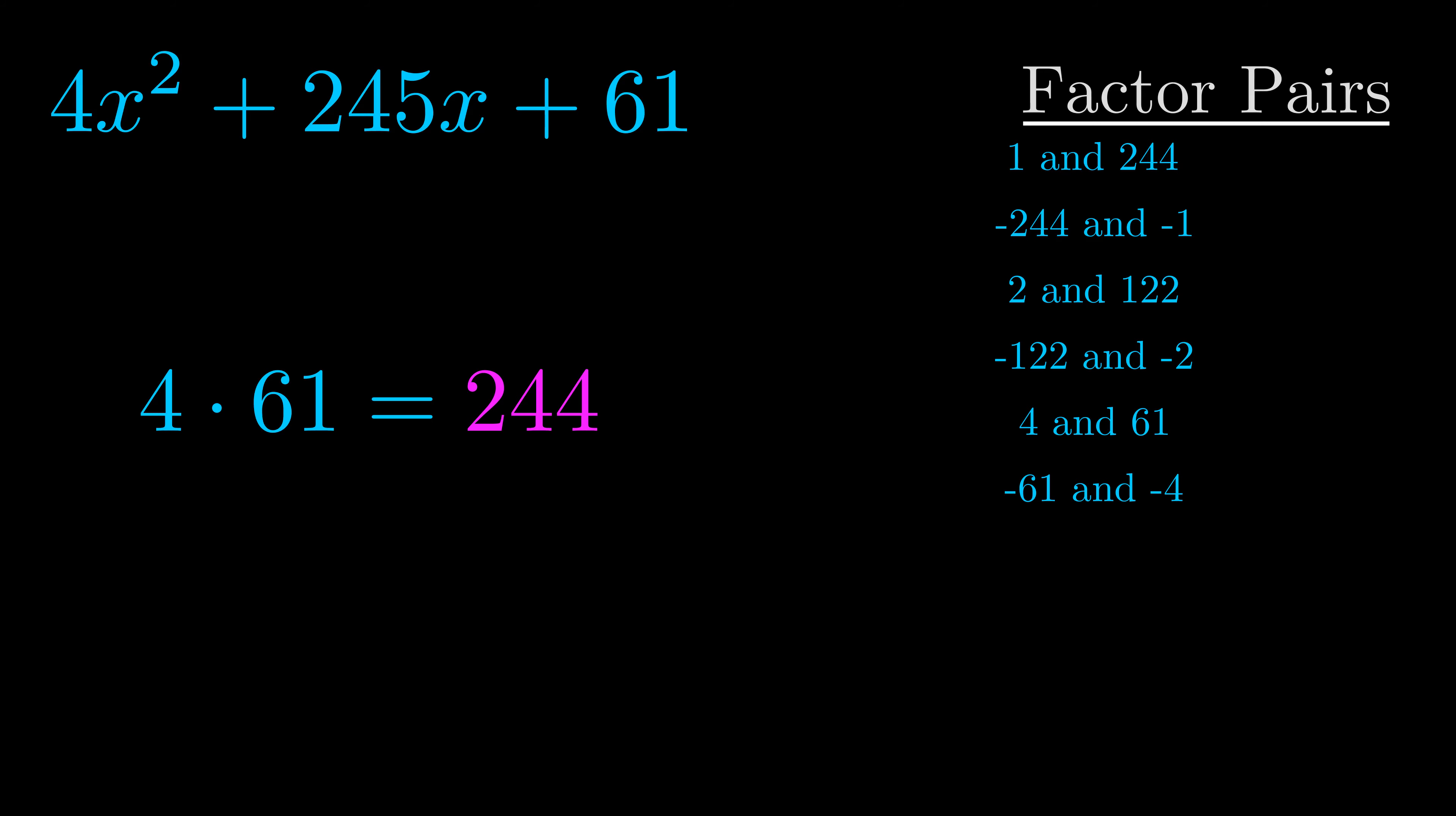The b value is the coefficient on the x term. That's the middle term, the one that we haven't done anything with yet. And really this is the only factor pair that we need.